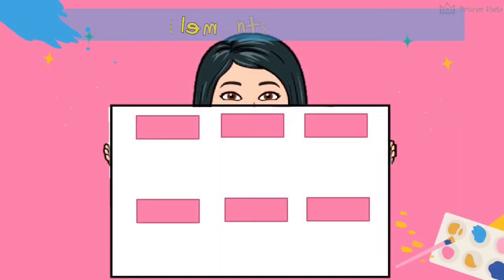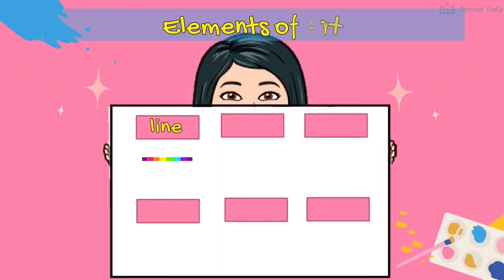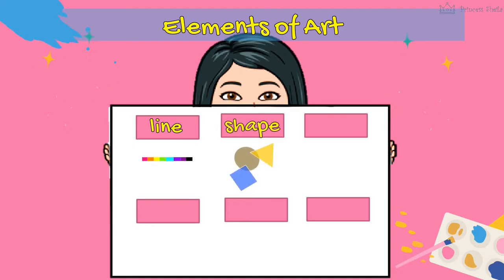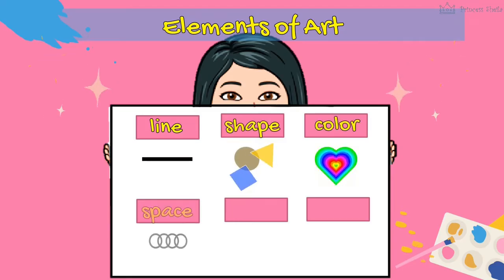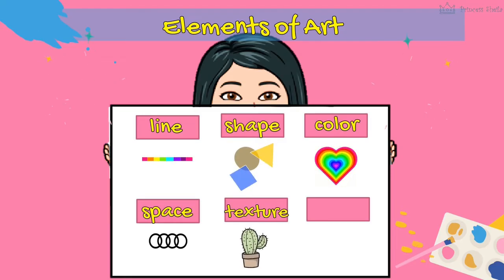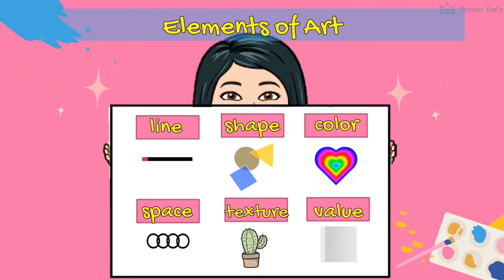The elements of art are line, shape, color, space, texture, and value. They are the basic building blocks of making art.